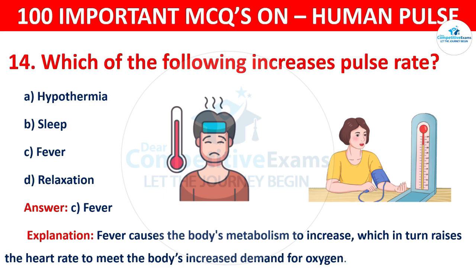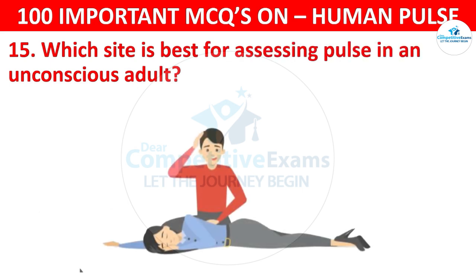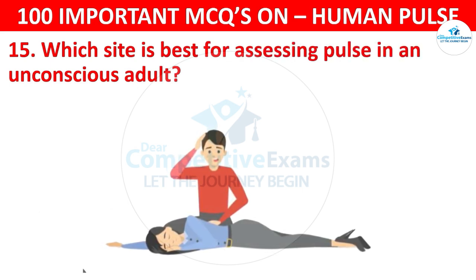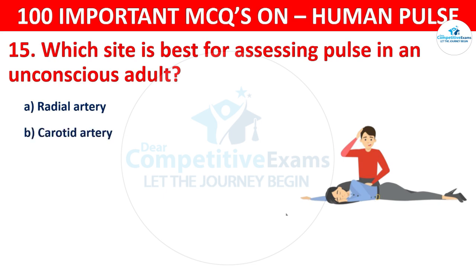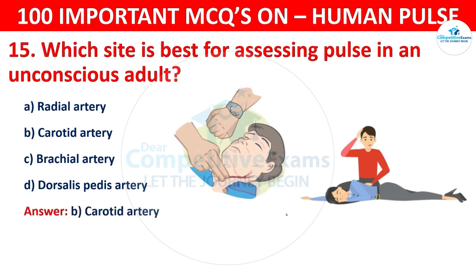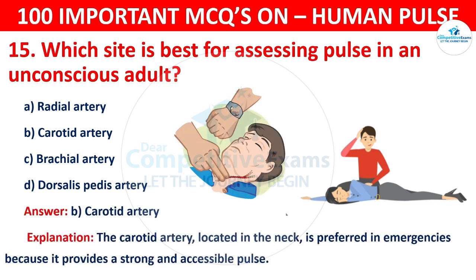Question number 15: Which site is best for assessing pulse in an unconscious adult? Options are: Radial artery, Carotid artery, Brachial artery, or Dorsalis pedis artery. The correct answer is B, that is carotid artery. The carotid artery, located in the neck, is preferred in emergencies because it provides a strong and accessible pulse.